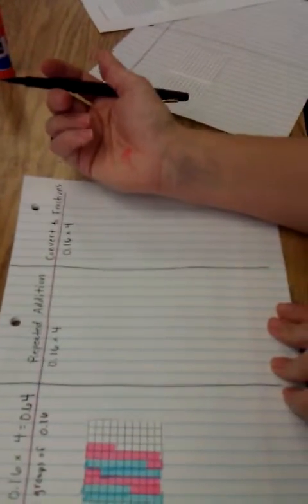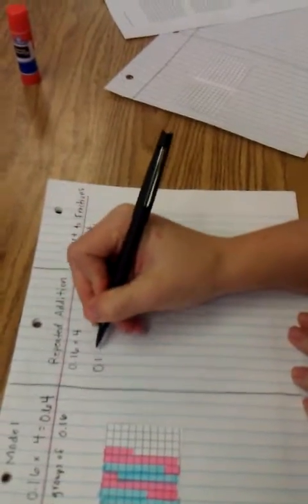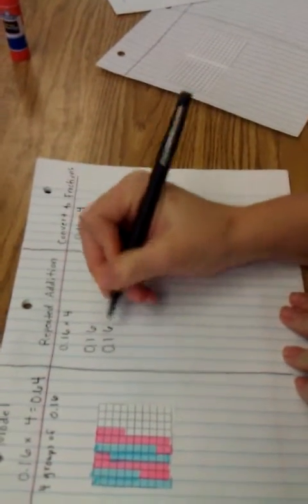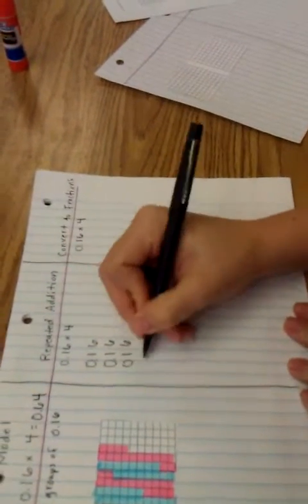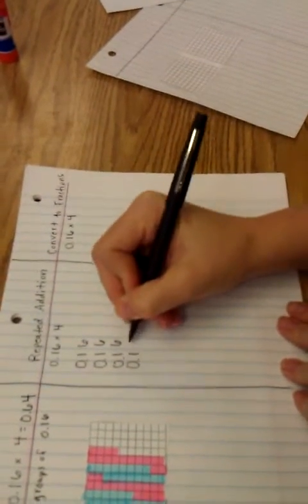So 16 hundredths times 4 is the same thing as 16 hundredths plus 16 hundredths plus 16 hundredths plus 16 hundredths.